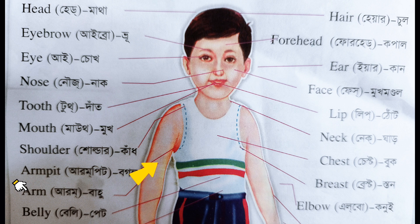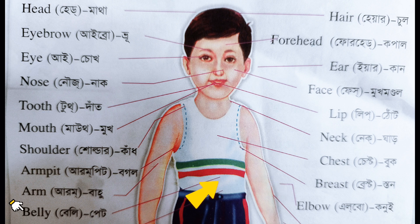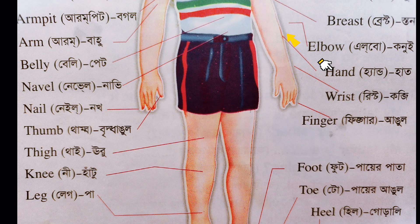Elbow — the Bangla meaning of Elbow is 'Konui'. Belly — the Bangla meaning of Belly is 'Pet'. Hand — the Bangla meaning of Hand is 'Haat'. Navel — the Bangla meaning of Navel is 'Nabhi'.